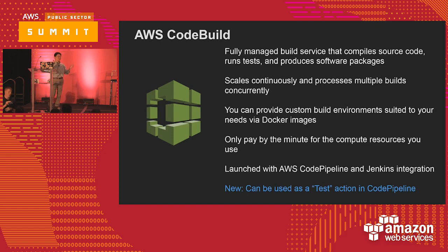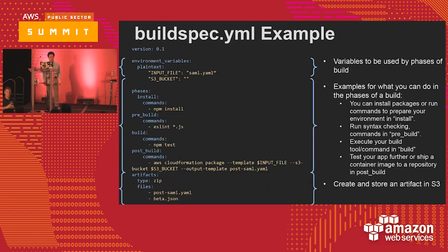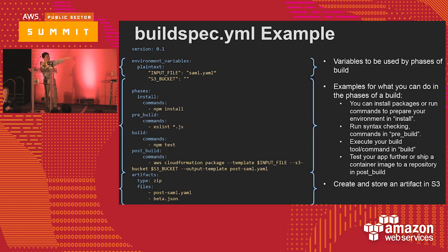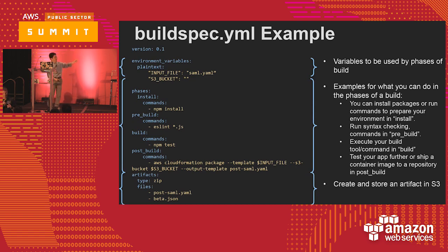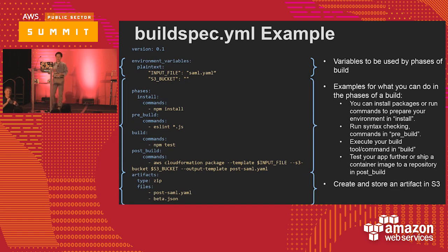For CodeBuild you need a file called buildspec. Think of it as a build script or specification file. You can define environment variables and different phases: at install time what commands to run, pre-build you can do linting with ESLint for JavaScript, scan your code, then do testing. You can see I have an AWS CloudFormation package command in there - it will package the resources, upload the function to S3, and the output would be another YAML file. The build artifacts are the exported template.